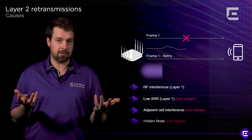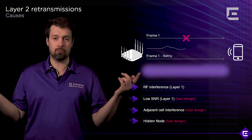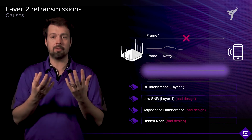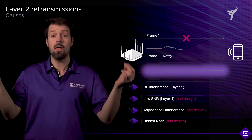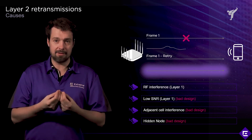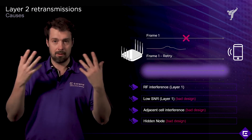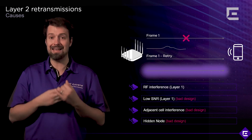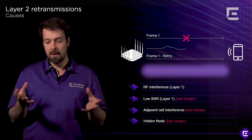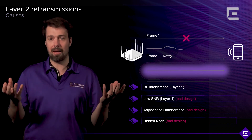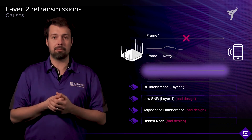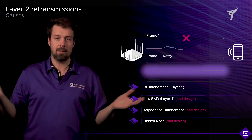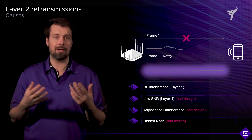Finally, you could have a hidden node scenario. A hidden node scenario is when you have three stations, two of which cannot see or hear each other through the RF space. If they cannot hear each other, they cannot coordinate medium access, and you can run into a scenario where they both transmit at the same time. When those transmissions collide, it causes interference and corruption of the frame — you drop the frame or never receive it, causing retransmissions. A straightforward example: a beam running across the ceiling with one AP on each side. They can both see the client device but cannot hear each other — a classic hidden node scenario.